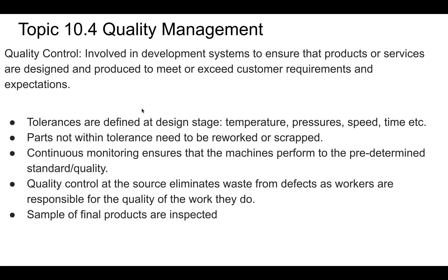So quality control — this is a definition from the IB, so make sure you know it — is the development of a system to ensure that products and services are designed and produced to meet or exceed customer requirements and expectations. One definition of happiness has to do with this: if your expectations are met, generally you are happy. If they're exceeded, you can be even happier. When your expectations are not met, that's generally where unhappiness comes in.